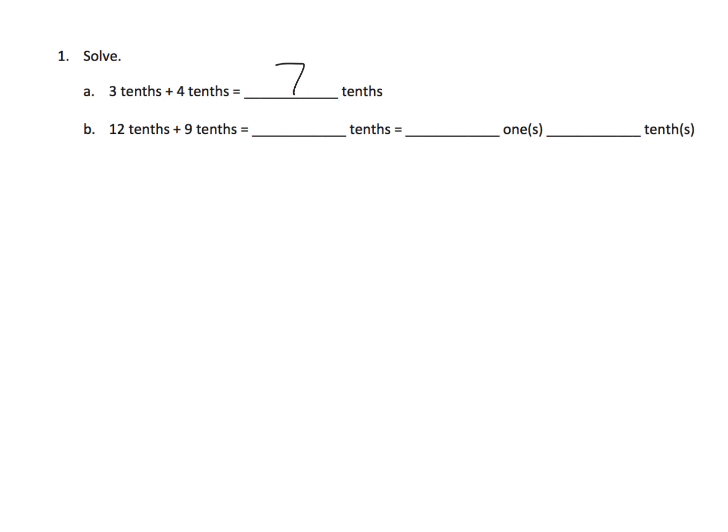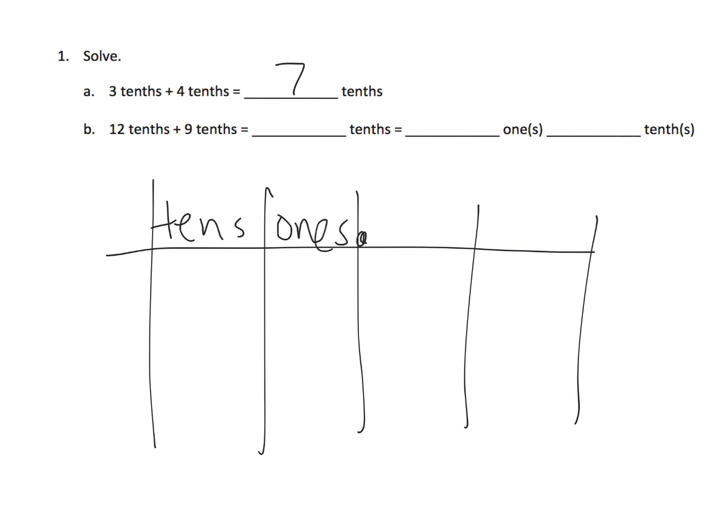And let's say the place value chart is you've got your tens, you've got your ones, and then here's your decimal point, and then you've got your tenths, and you've got your hundredths, etc., alright?